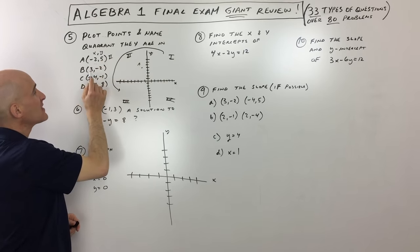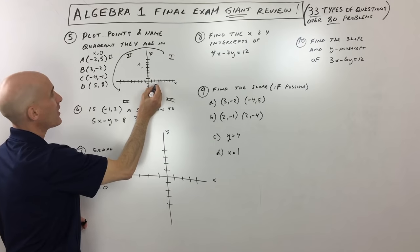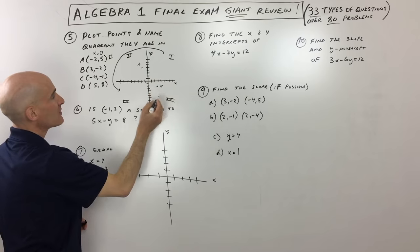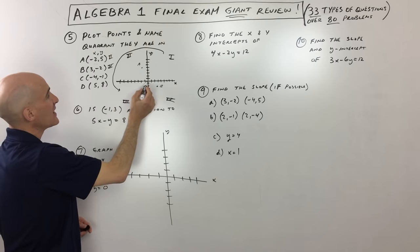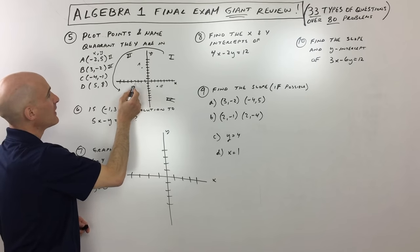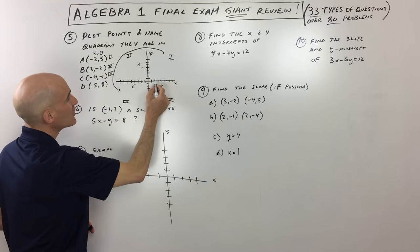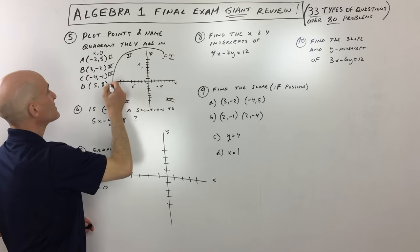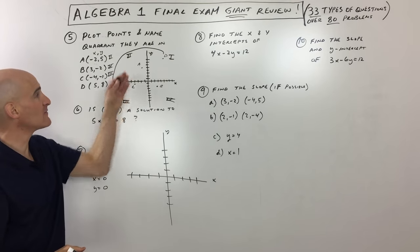Point D is 5, 8 — go right 5 and up 8 — that's in quadrant 1. Just a little bit of review about plotting points and knowing the names of the quadrants.